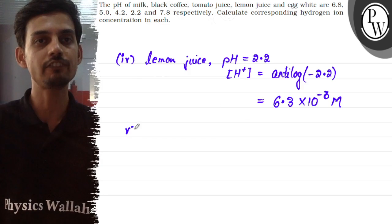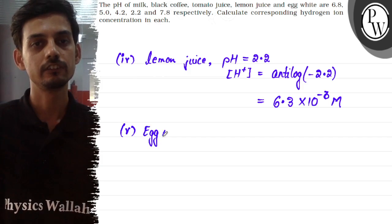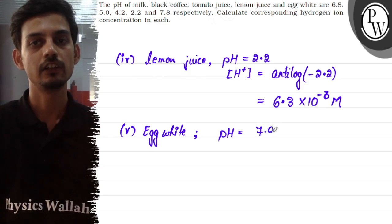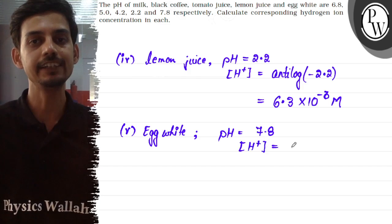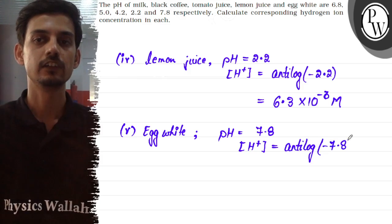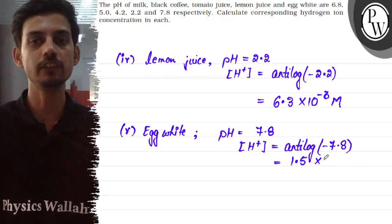And for the fifth and final part, we are given egg white, and the pH of egg white is 7.8. So the concentration of H+ ion in this will be antilog of minus 7.8. This will come out to be 1.5 × 10^(-8) moles per liter.